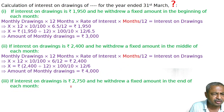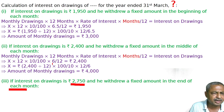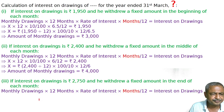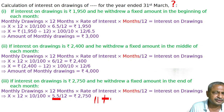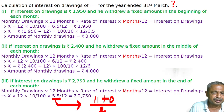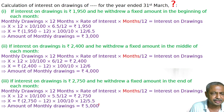The third case states interest on drawings is 2750, and a fixed amount is drawn at the end of each month. The average months factor is 5.5/12. The first withdrawal is on April 30th, giving 11 months remaining to 31st March. The last withdrawal is on 31st March, giving 0 months. So (11 + 0) divided by 2 equals 5.5 months. Interest is calculated for 5 and a half months. Solving the equation, the amount of monthly drawings is 5,000.